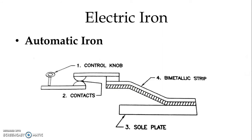Here we can see the construction with the bi-metallic strip and sole plate. It is connected with the sole plate. Here we have sole plate and bi-metallic strip that is connected with the sole plate. Here we have contact and we have temperature setting control knob.